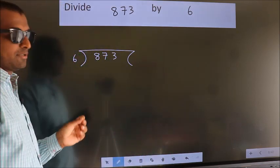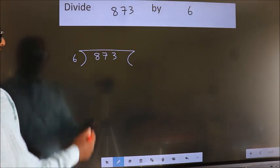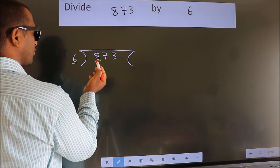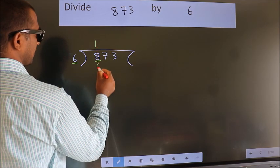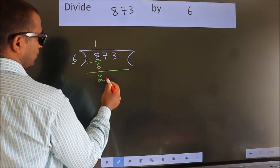This is your step 1. Next, here we have 8, here 6. A number close to 8 in 6 table is 6 times 1 equals 6. Now, we should subtract. We get 2.